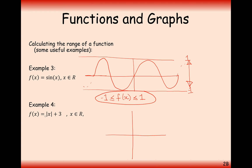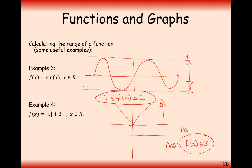In this question we have modulus of x plus 3 — that's the modulus x graph moved up 3. It's going to look like a V-shape starting from 3 and going upwards. So the possible y-coordinates are from 3 upwards, and the answer is f of x is greater than or equal to 3. That's the range for this function.